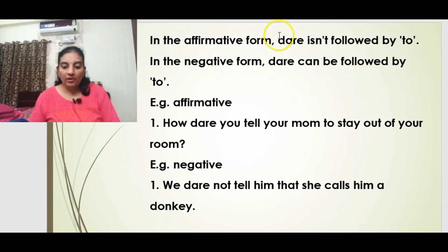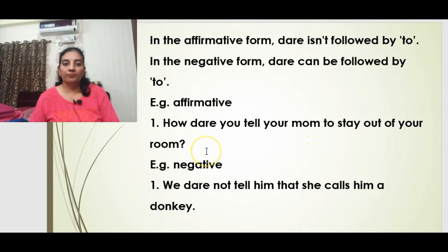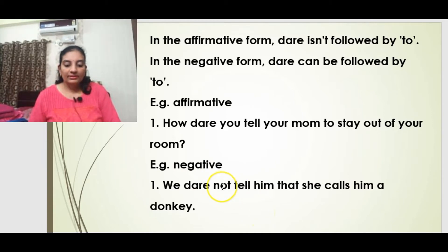In the affirmative form, dare is not followed by 'to' (the infinitive). In the negative form, dare can be followed by 'to.' Example of affirmative: 'How dare you tell your mom to stay out of your room.' Example of negative: 'We dare not tell him that she calls him a donkey.' If 'not' is present, it is a negative sentence; if not, it is affirmative.